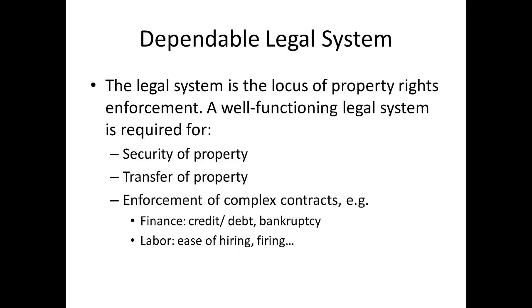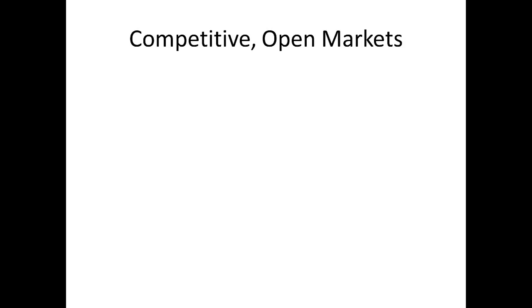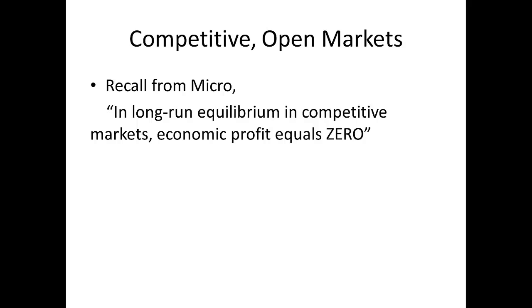Finally, let's wrap up our brief institutional overview by thinking about one very important thing you hopefully covered in your micro class: having competitive and open markets. Remember from micro — in long-run equilibrium, competitive markets have economic profit equal to zero. Firms still get a return on their capital, but they can't get above the normal return. In a real equilibrium with no changes in technology or preferences, all returns would just equal a natural rate of interest. The real-world implication is that profits tend to be competed away.